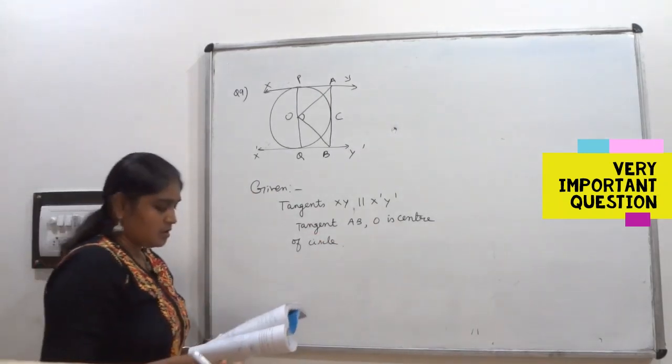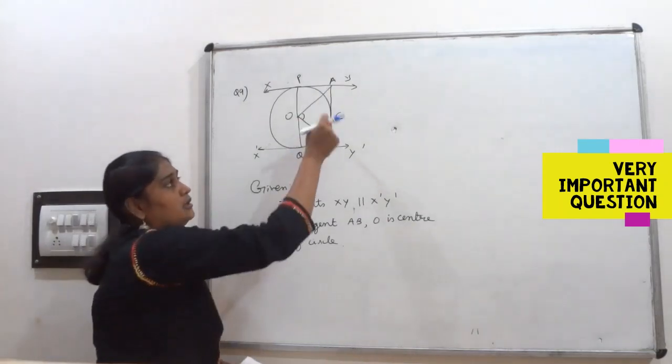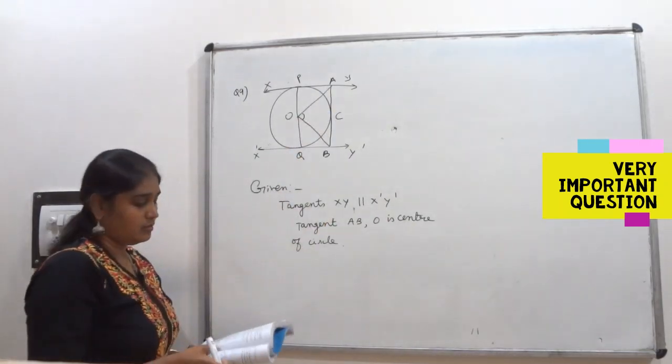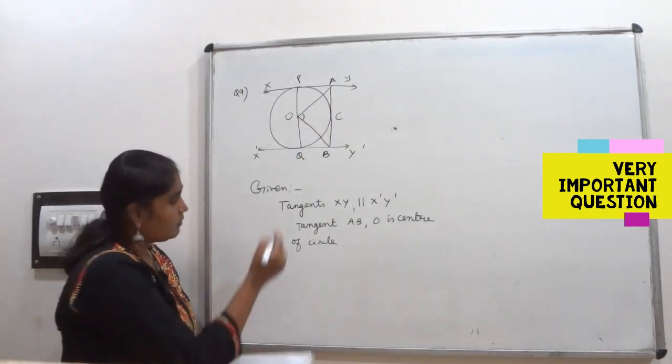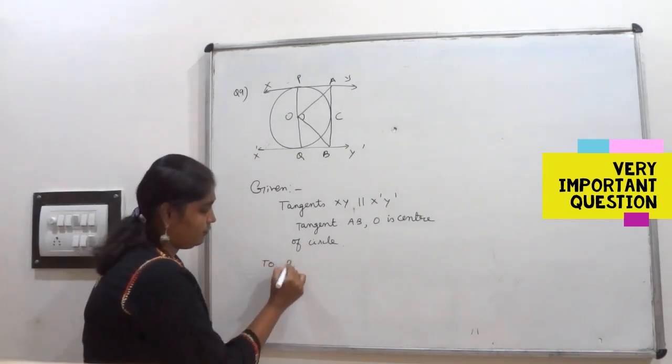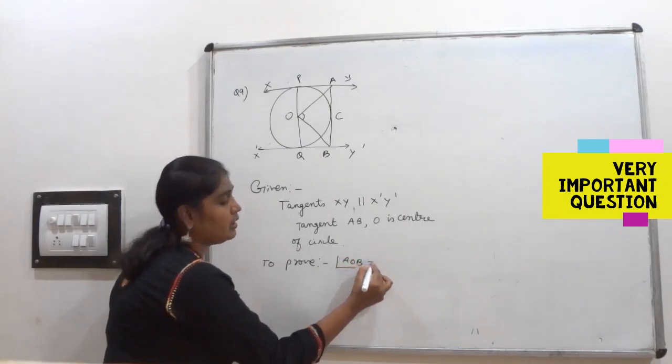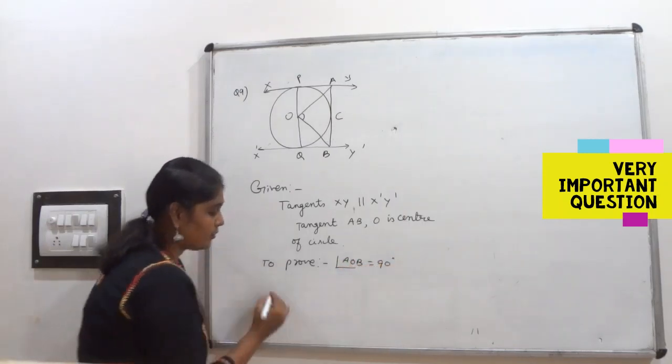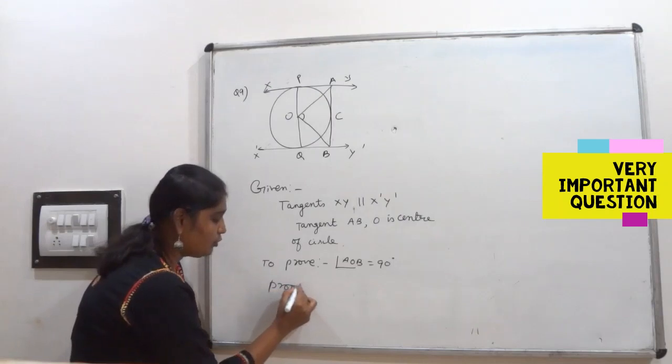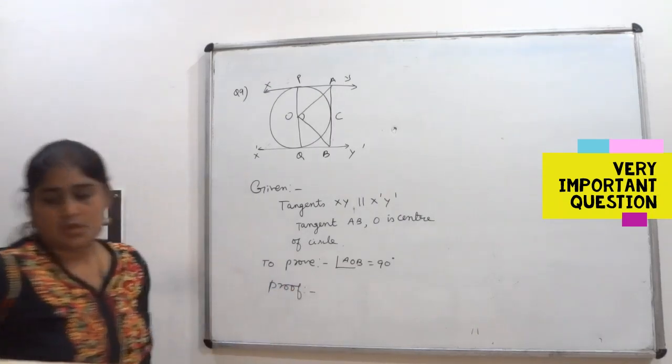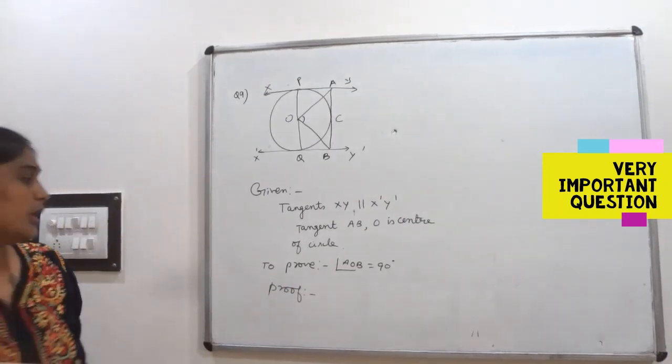Then C is point of contact of tangent. To prove what you have to prove: that is angle AOB equal to 90 degrees. So how are you going to prove this angle AOB equal to 90 degrees?